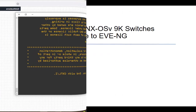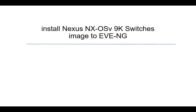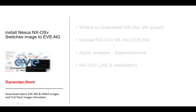Hey guys, welcome to my channel. In today's video I'm going to help you how to deploy Nexus NX-OS 9K switch images into your EVE-NG or GNS3. We're going to talk about where to download Nexus OS 9K QCOW2 format, how to upload it correctly with WinSCP or FileZilla, apply the wrapper fix command, create a lab, connect the switch to the internet, and test it in the simulator.